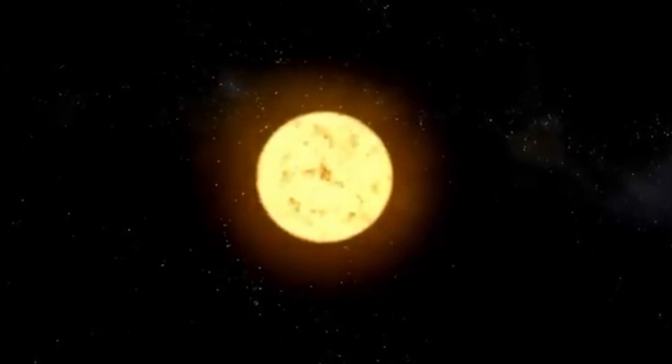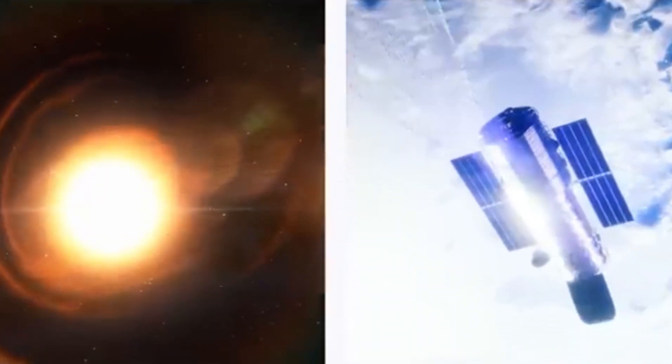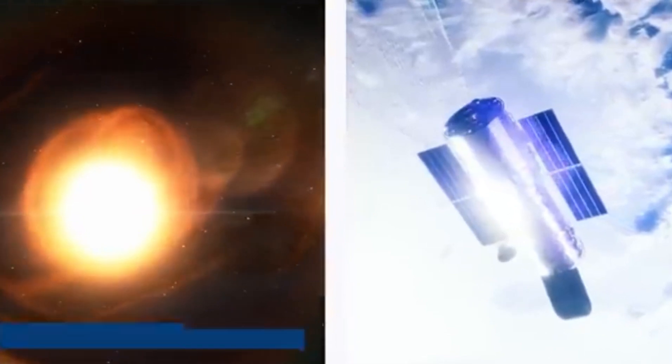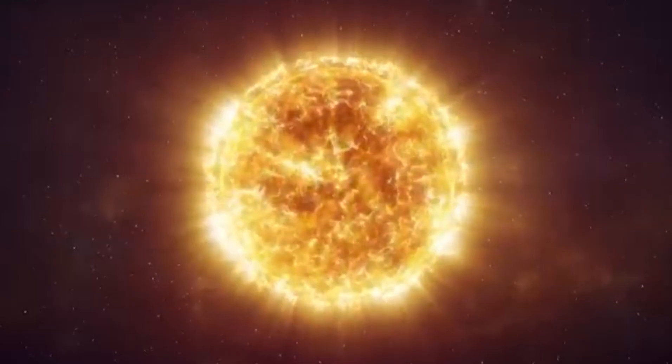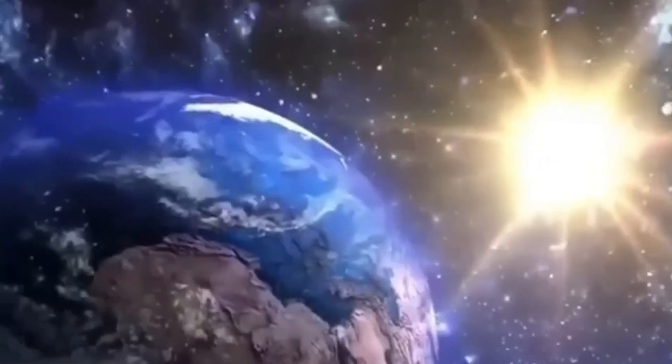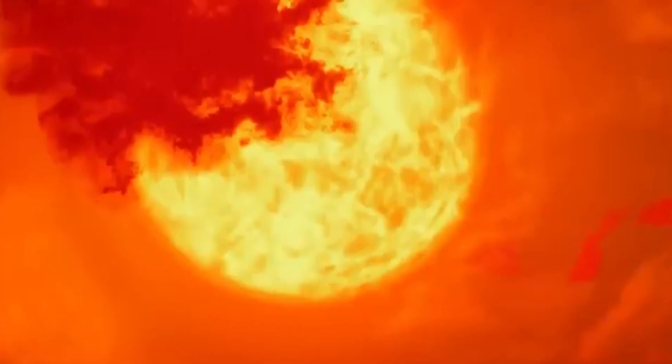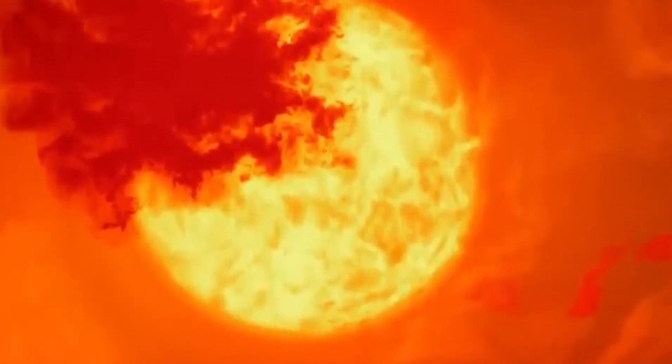Among these stellar giants, Betelgeuse, the prominent red supergiant in the constellation Orion, has recently captured the attention of astronomers and the public alike. With its mysterious dimming and speculation about an imminent supernova event, to understand the significance of a supernova like Betelgeuse, we delve into their formation, their impact on the universe, and the scientific endeavors aimed at unraveling their mysteries.